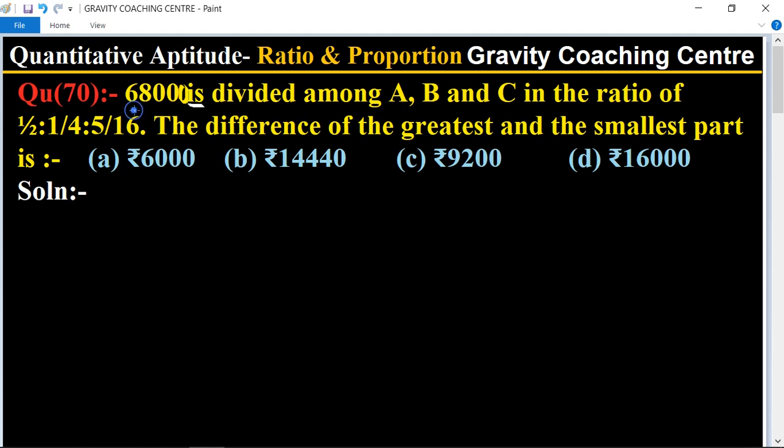The amount 68000 is divided among A, B and C and their ratios are given. A ratio B ratio C equal to 1/2 ratio 1/4 ratio 5/16.